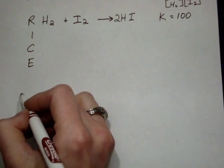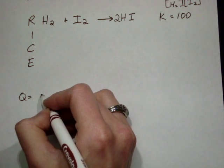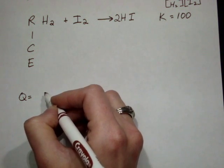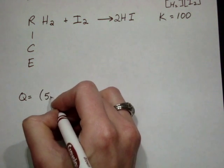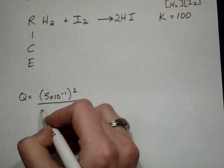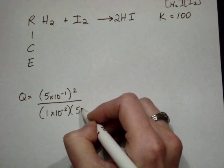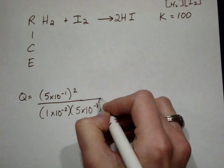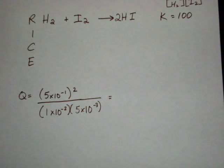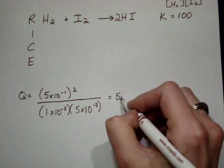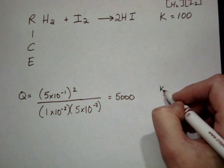Q would be the pressure of HI squared, that's 5 times 10 to the negative 1 over pressure of H2, 1 times 10 to the negative 2, and the pressure of I2, 5 times 10 to the negative 3. Plug all that in the calculator. So, I get 5,000 out of that. That's my Q. My K is 100.